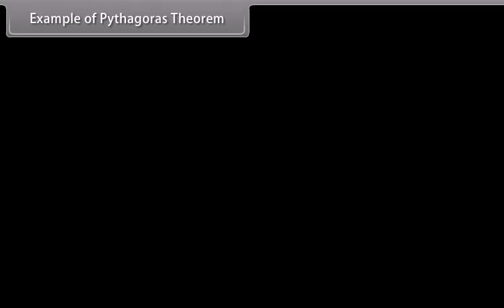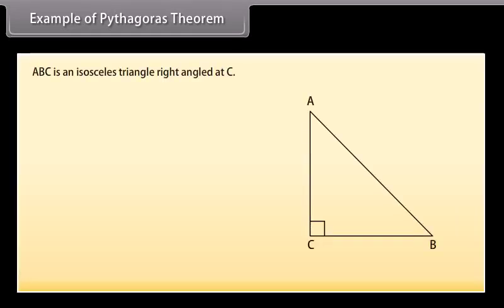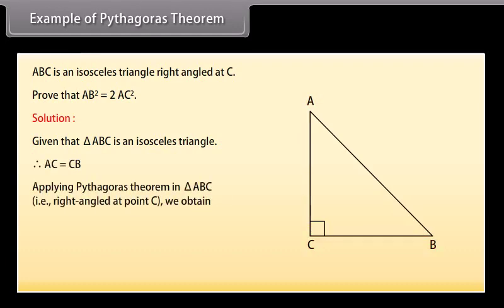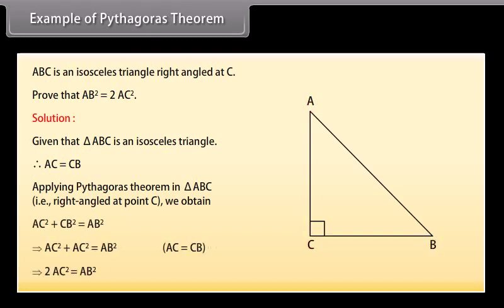Example of Pythagoras Theorem: ABC is an isosceles triangle right angled at C. Prove that AB² = 2AC². Solution: Given that triangle ABC is an isosceles triangle, therefore AC = CB. Applying Pythagoras theorem in triangle ABC, right angled at point C, we obtain AC² + CB² = AB², which implies 2AC² = AB².